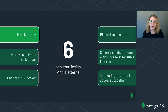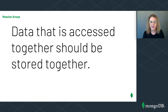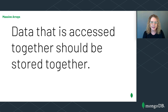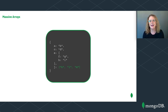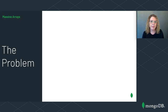Let's kick things off with the first anti-pattern: massive arrays. One of the rules of thumb when modeling data in MongoDB is that data that is accessed together should be stored together. Data is commonly stored together by embedding related information in sub-documents or arrays. Sometimes developers take this too far and embed massive amounts of information in a single unbounded array — and that's where we see the massive arrays anti-pattern. Two problems commonly pop up when developers create these massive unbounded arrays.